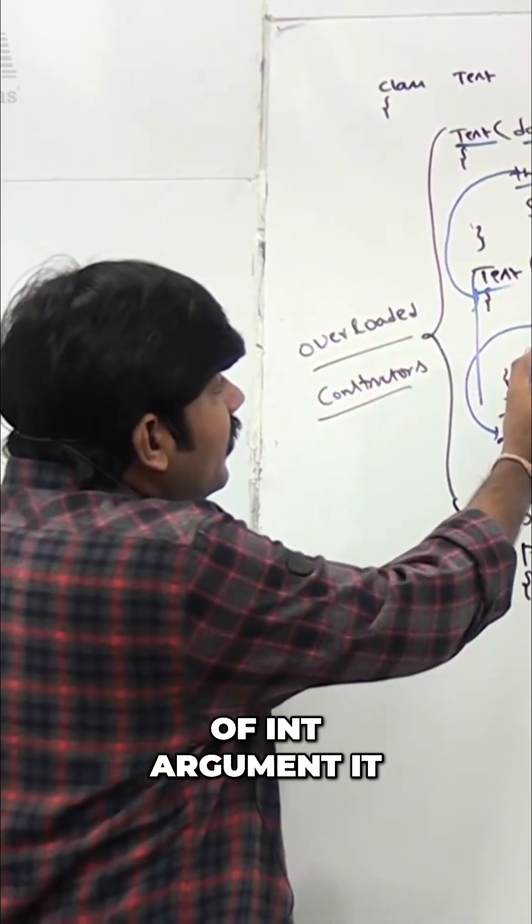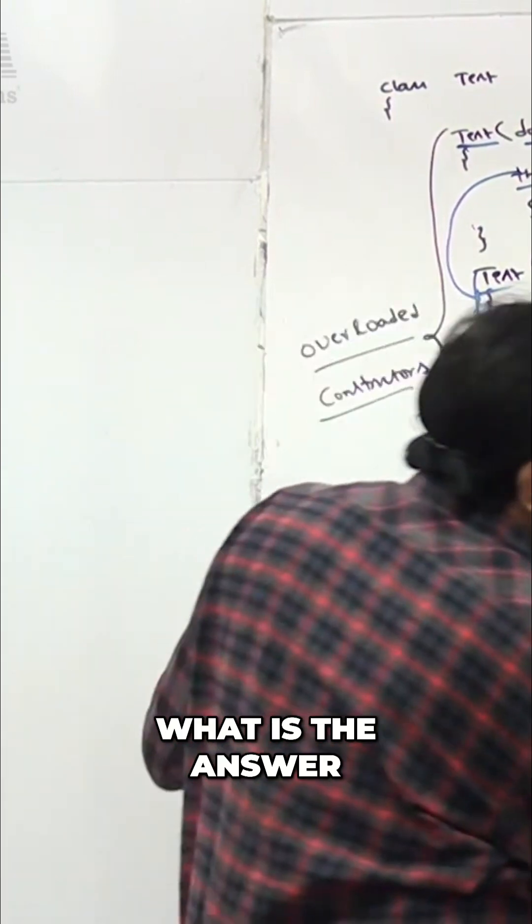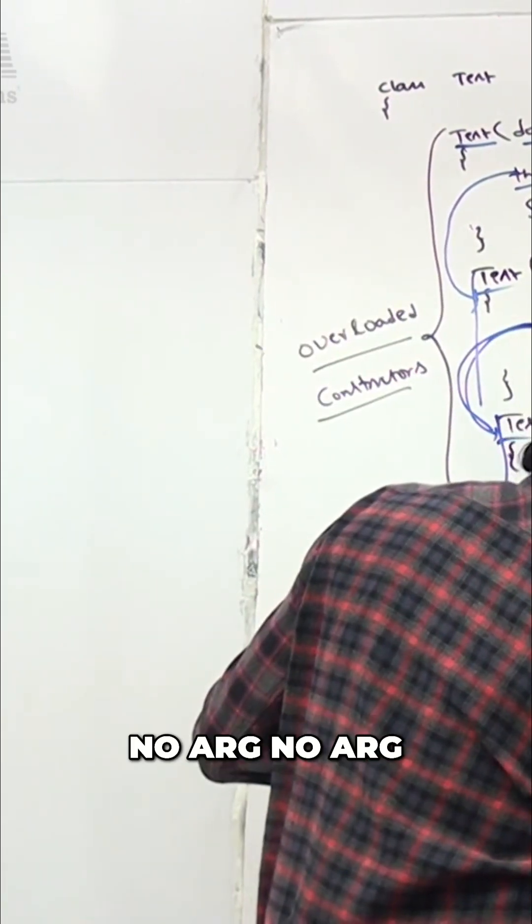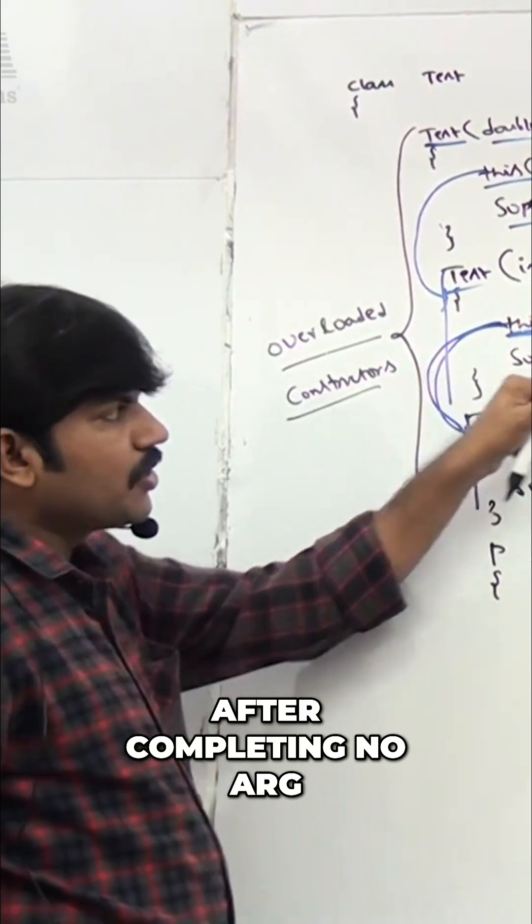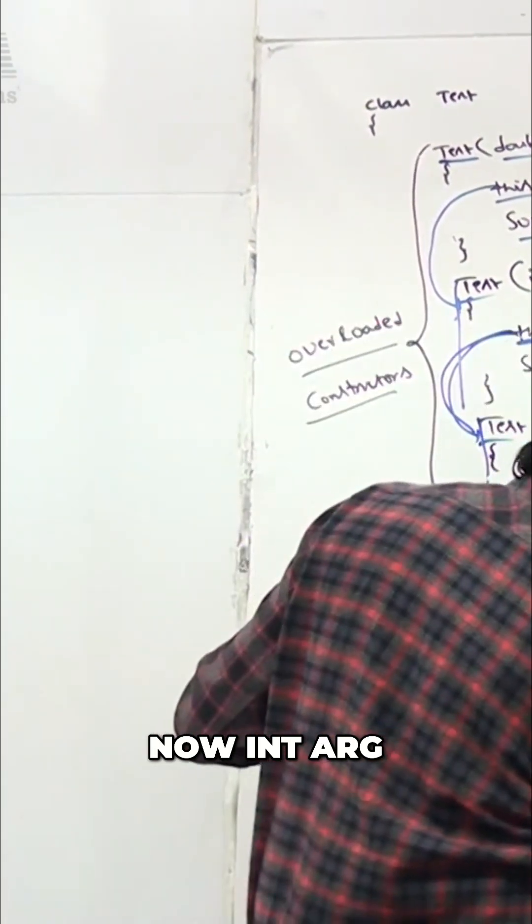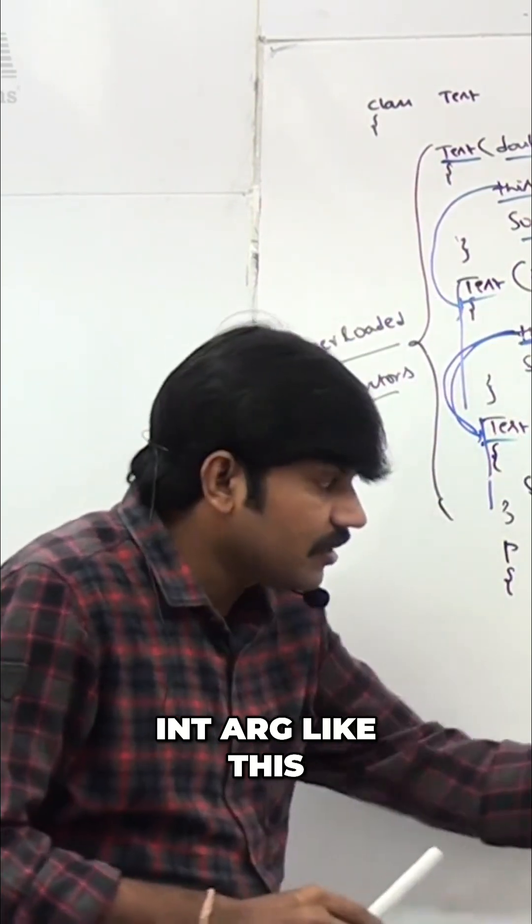...it is going to call the no-arg constructor. That's why what is the answer? No arg. After completely executing no arg, now int arg. No arg followed by int arg - like this we are going to get the output.